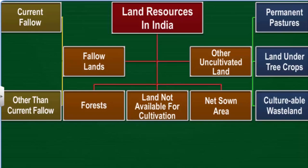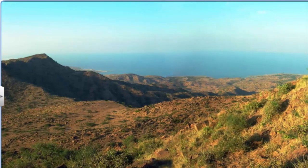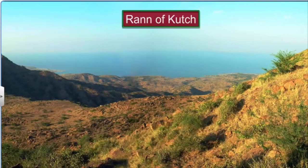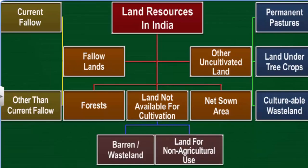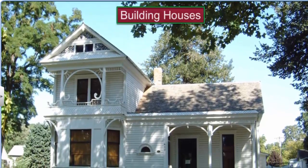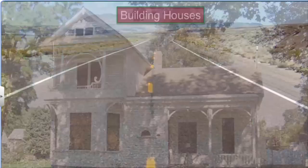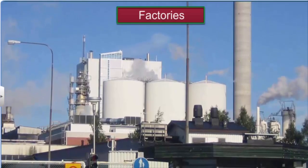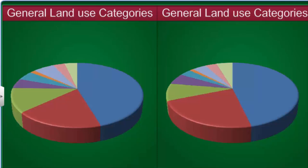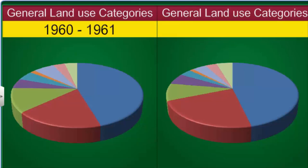Other-than-current fallow land is either of poor quality or costs too high to cultivate, so it is sometimes cultivated once in two or three years. Land not available for cultivation is either barren wasteland, like the salty plains of the Rann of Kutch, or land used for non-agricultural purposes like building houses, roads, and factories.